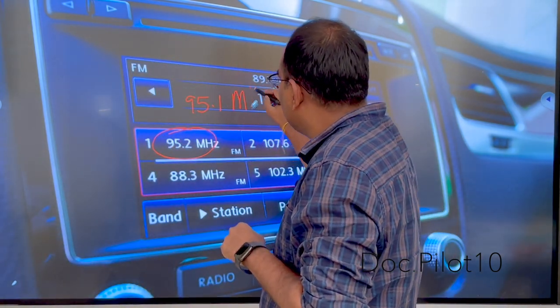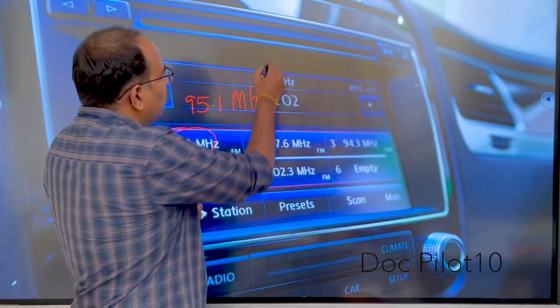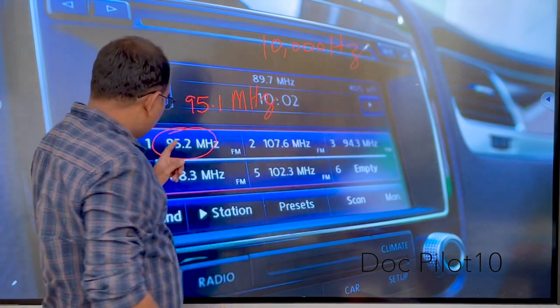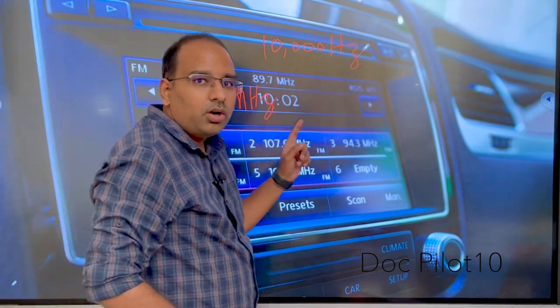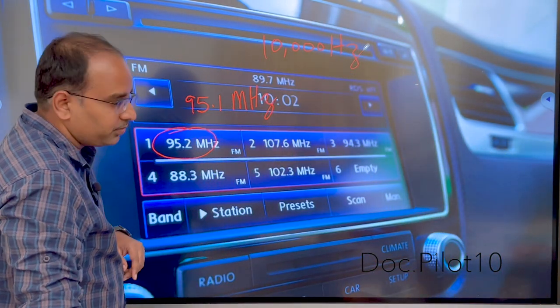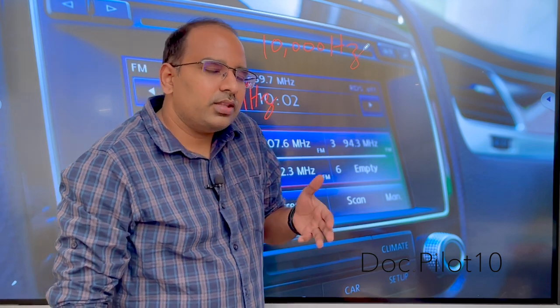Now if you see, 95.1 megahertz and 95.2 megahertz are at a distance of 10,000 hertz, but still you can listen the song on 95.1 megahertz what is played on 95.2 megahertz. That means they are overlapping. Let's understand why this overlap happens.